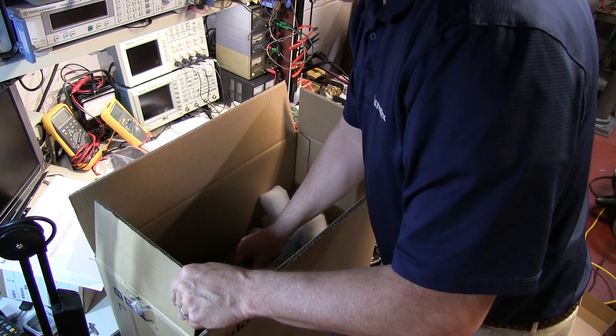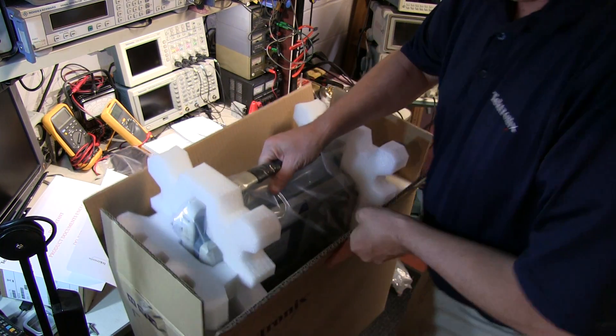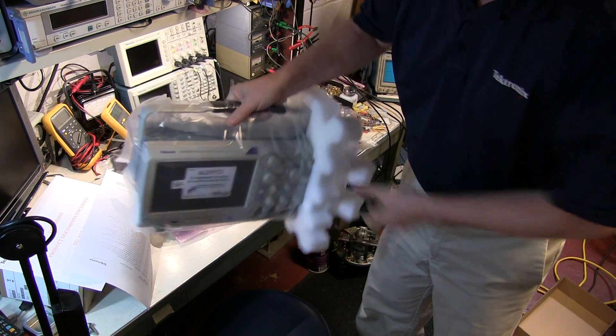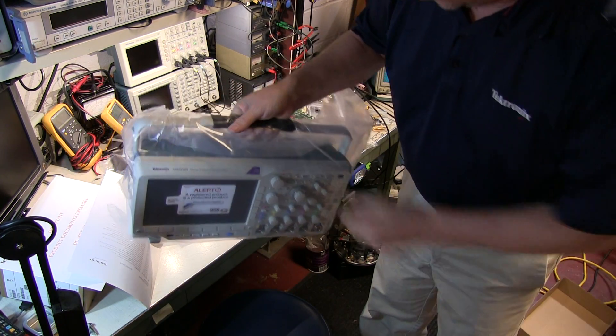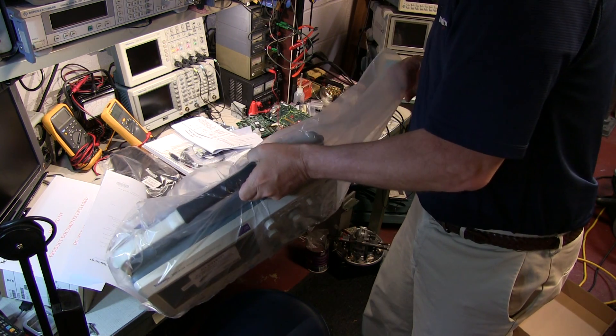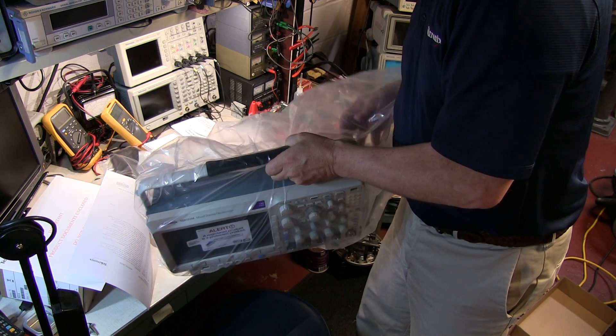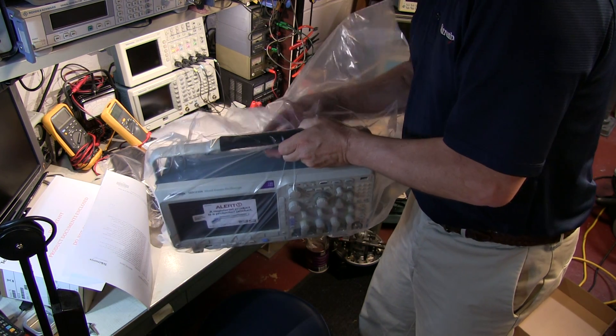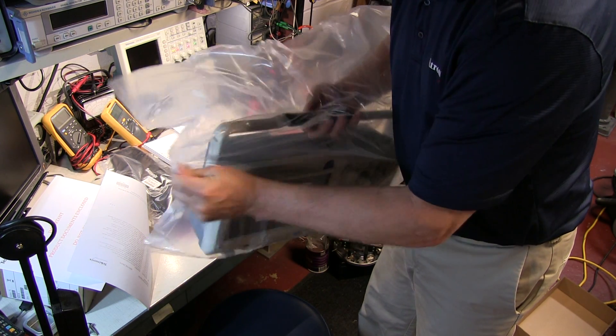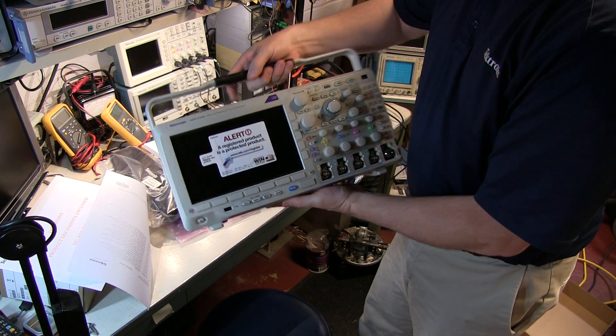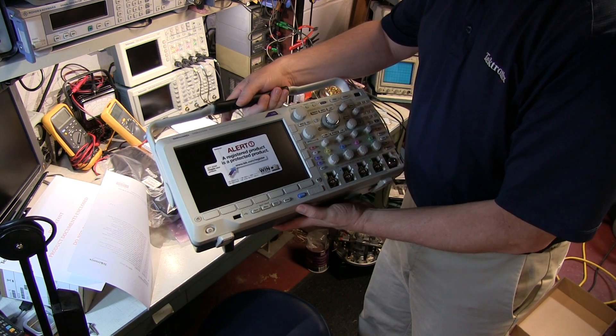So we'll take out the unit itself. So there's the MDO 3000. I'll try to resist the urge as Dave did to run my nose across it and smell it as much as we all want to do that. So there she is, the new MDO 3104 mixed domain oscilloscope.